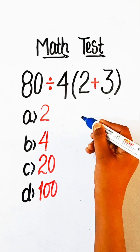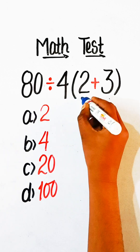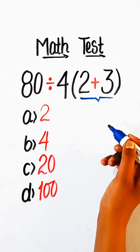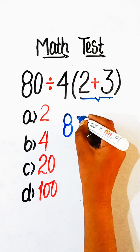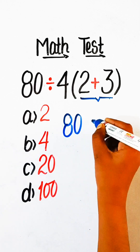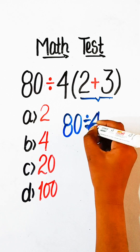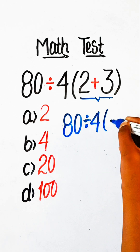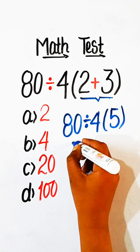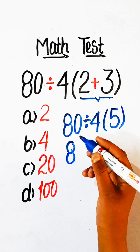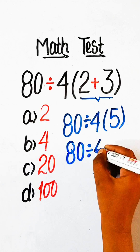So let's solve it together. First we have to solve the bracket part. 80 divided by 4, and 2 plus 3 is 5.